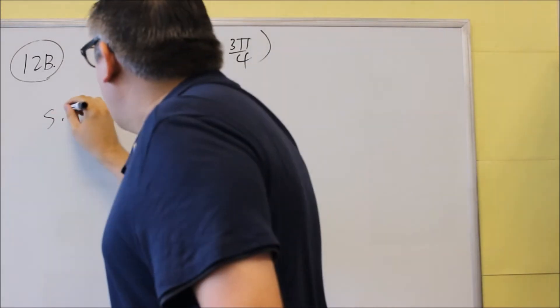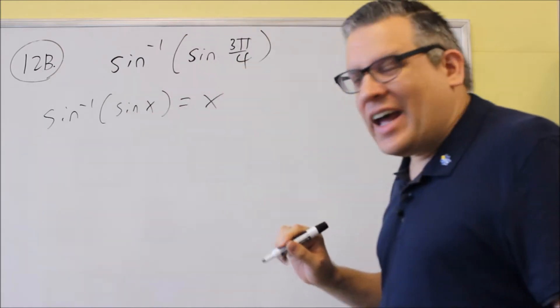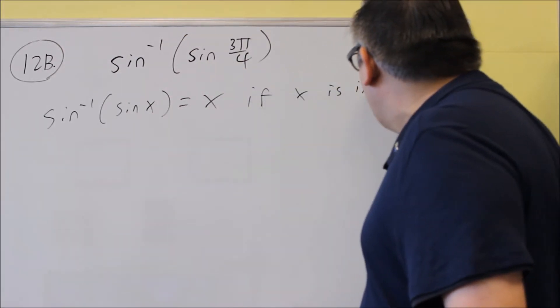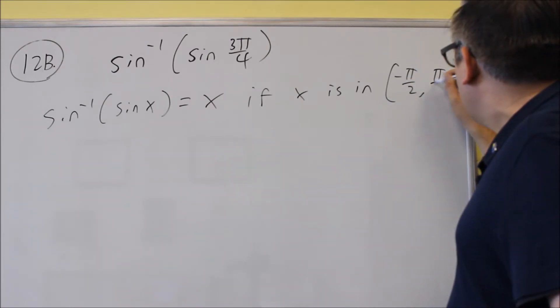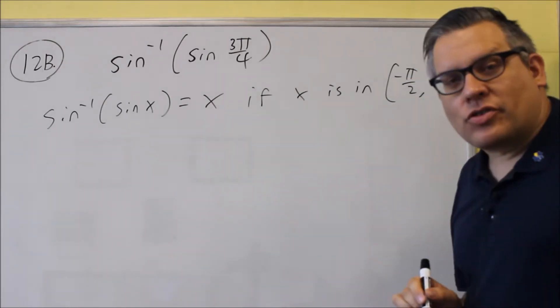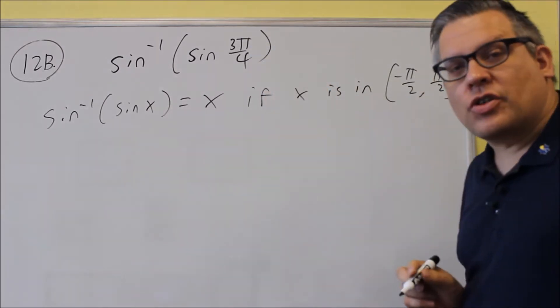Now the rule says that inverse sine of sine of x equals x if x is in the interval from negative π over 2 to π over 2. So we have to think about whether 3π over 4 falls in there.